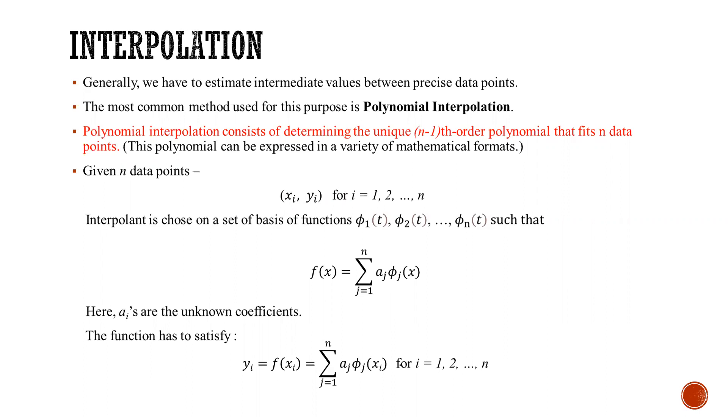What is polynomial interpolation? Polynomial interpolation consists of determining the unique n-1th order polynomial that fits n data points. This polynomial can be expressed in a variety of mathematical formats such as monomial basis, Lagrangian interpolation, Newton interpolation, etc.